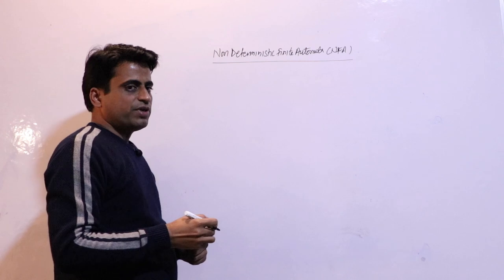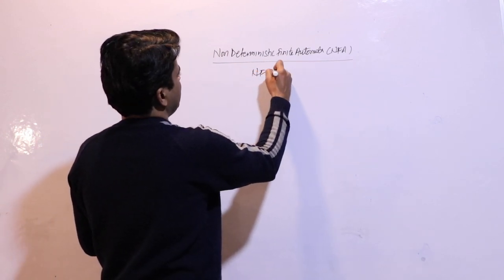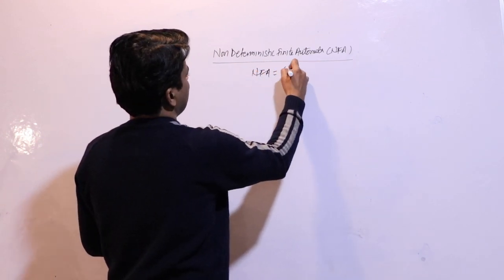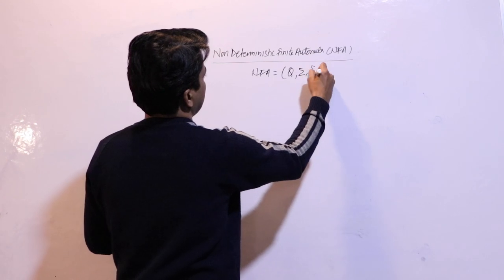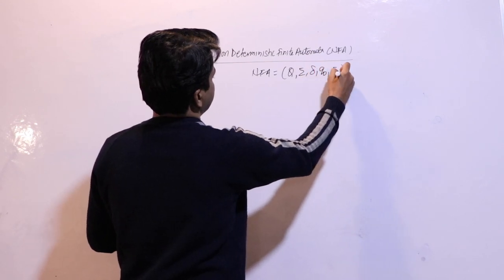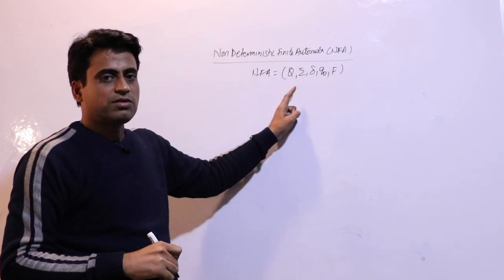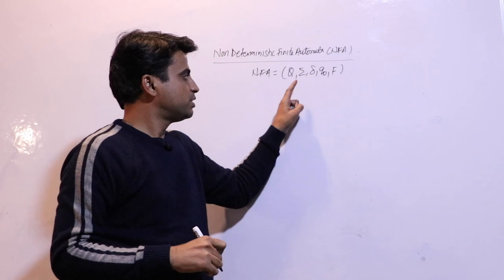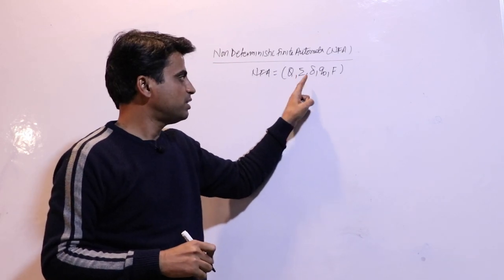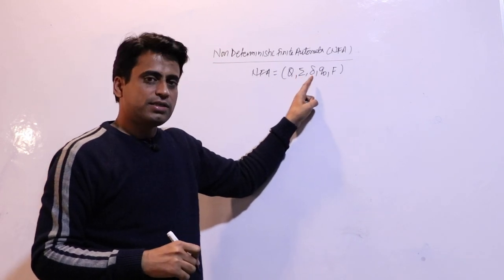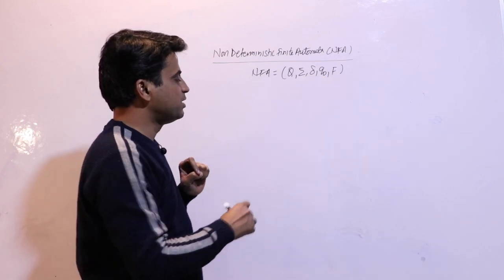NFA is also a finite automata. To represent any NFA, the same 5-tuple representation is required: Q is a set of states, sigma is a set of input symbols — both are finite sets. Delta is a transition function, q-naught is the initial state, and F is the final state.